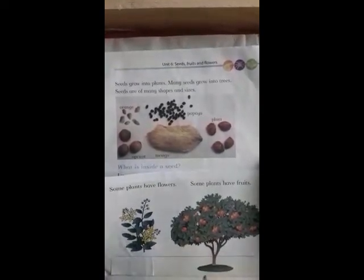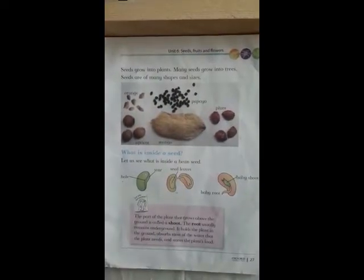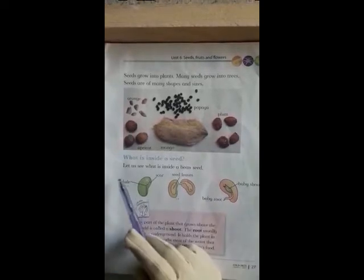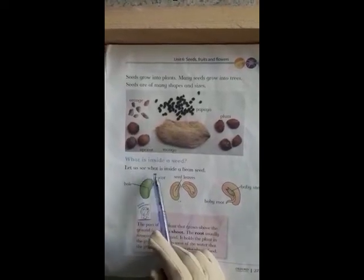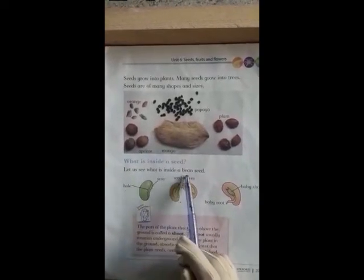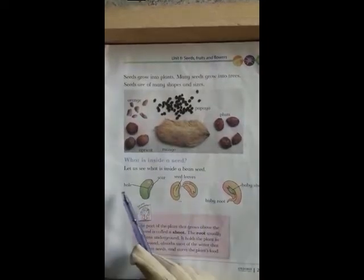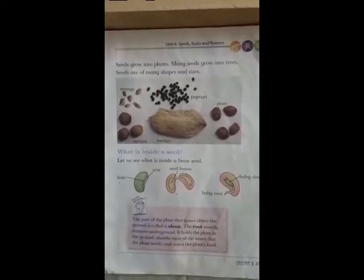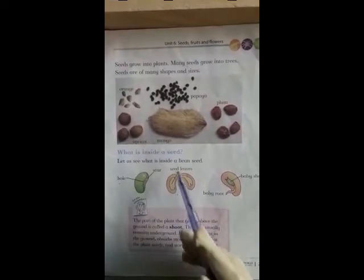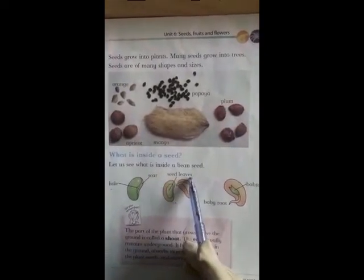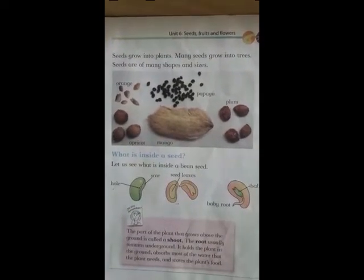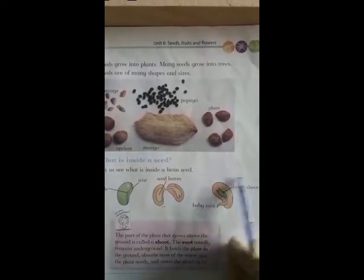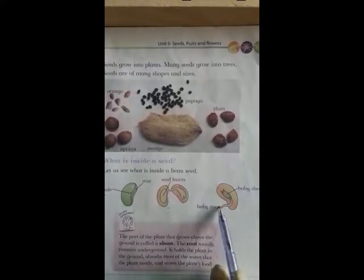Some plants have flowers; some plants have fruits. What is inside a seed? Let us see what is inside a bean seed. This is a hole and this is a scar. When you open a seed, you see seed leaves. In this seed, you see a baby shoot and a baby root.